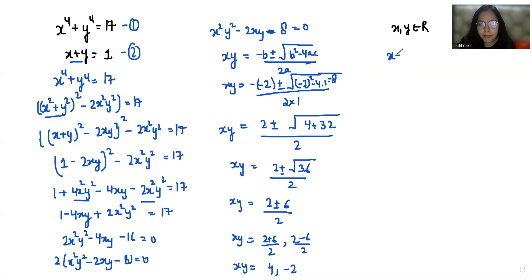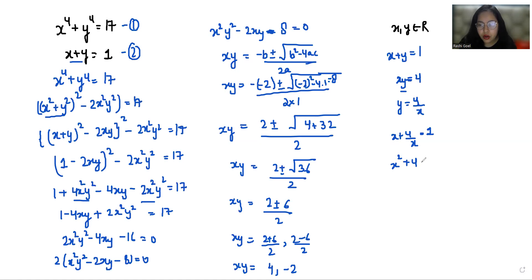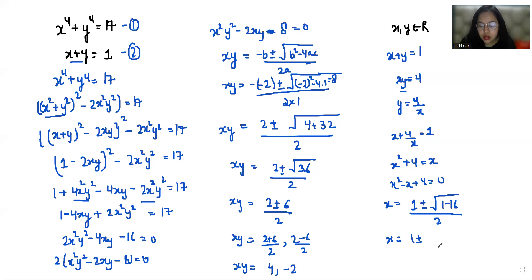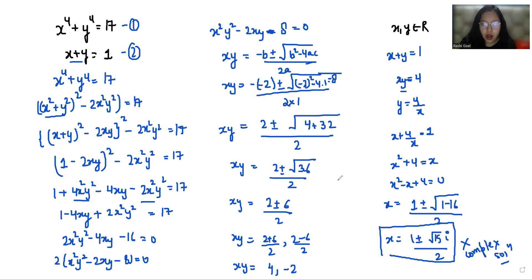Now we have x + y = 1 and xy = 4 (Case 1). From xy = 4, y = 4/x. Substituting into x + y = 1: x + 4/x = 1, giving x² − x + 4 = 0. Using the quadratic formula: x = (1 ± √(1 − 16)) / 2 = (1 ± √−15) / 2, which involves iota. We reject this case as it gives complex solutions.